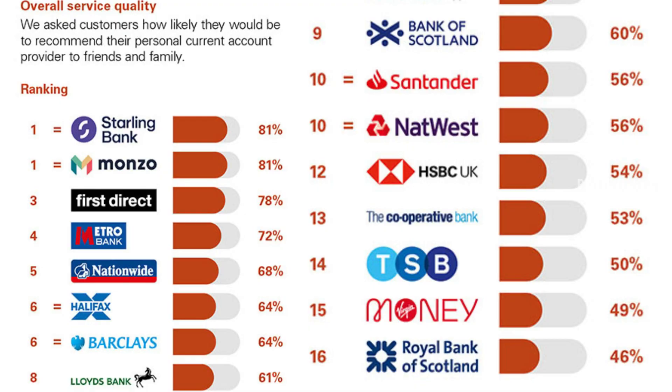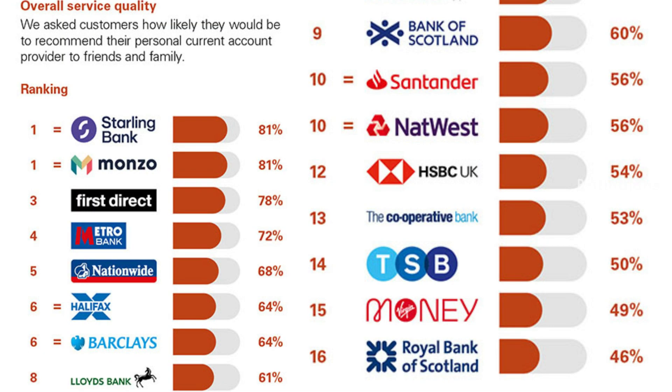You may wonder which is the top or best bank. There's a private website that publishes this data. For overall service quality, Starling and Monzo are ranked number one — they're easy to use and issues can be resolved by chat in the app without queuing at a branch. For online and mobile banking services, Starling and Monzo are again at the top, with other banks following.